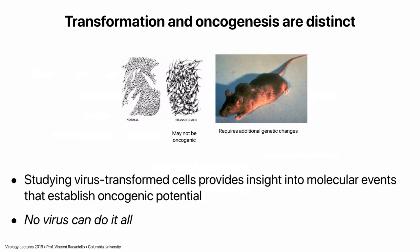Remember that transformation and oncogenesis are distinct. Transformation is simply a cell that divides forever and is immortal. It may or may not be oncogenic — to know, you could inject it into a nude mouse. Here a human tumor cell line has been injected into a nude mouse, and a tumor has formed. We use nude mice because they don't have an immune system, so they won't reject the cells. Transformed cells simply grow forever. Eventually they may sustain enough mutations to become oncogenic, and this whole molecular relationship between transformation and oncogenesis was revealed by studying viruses.